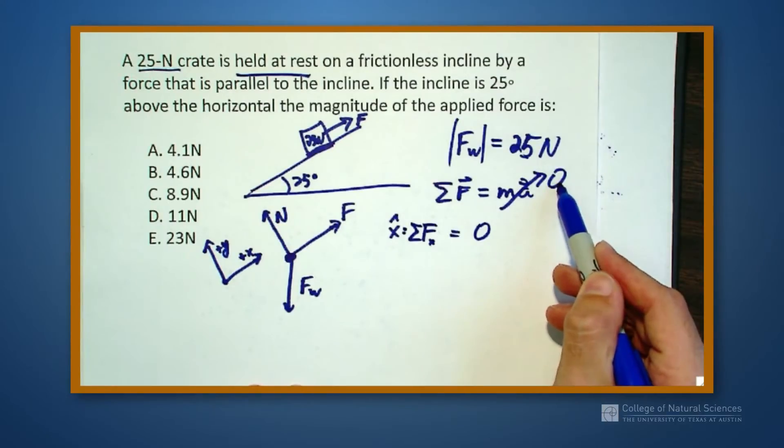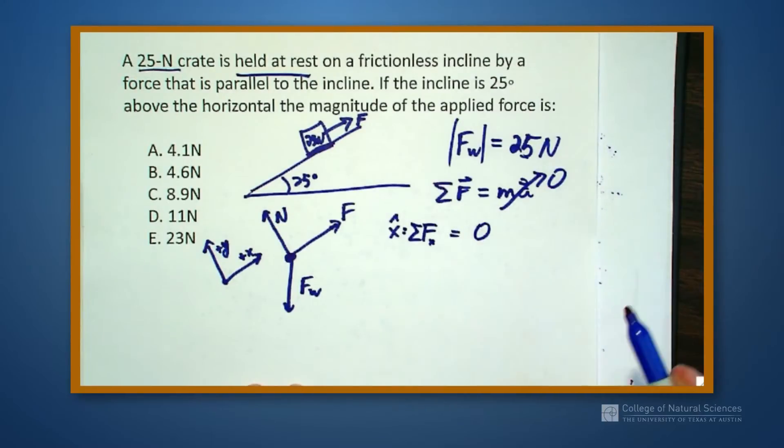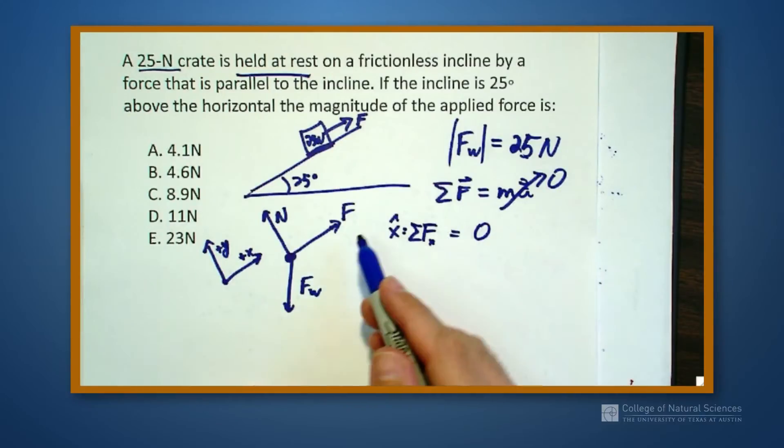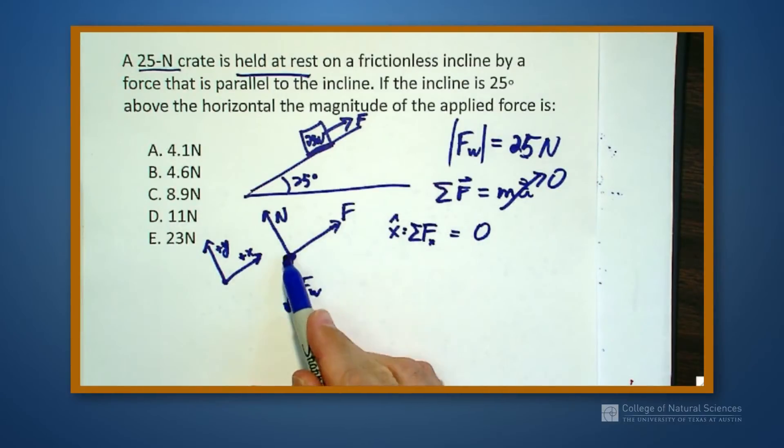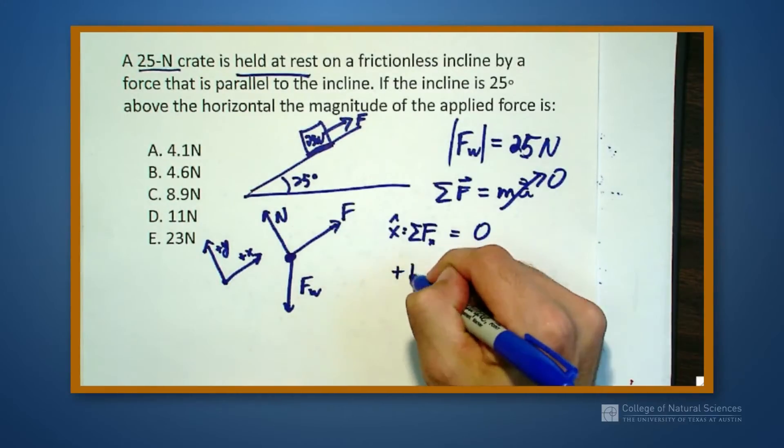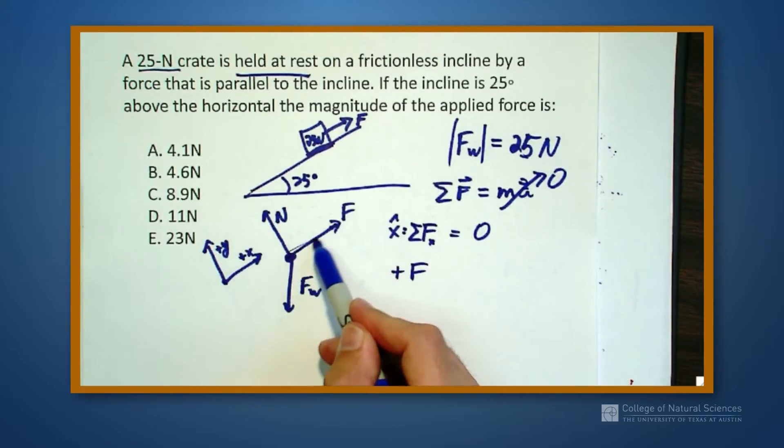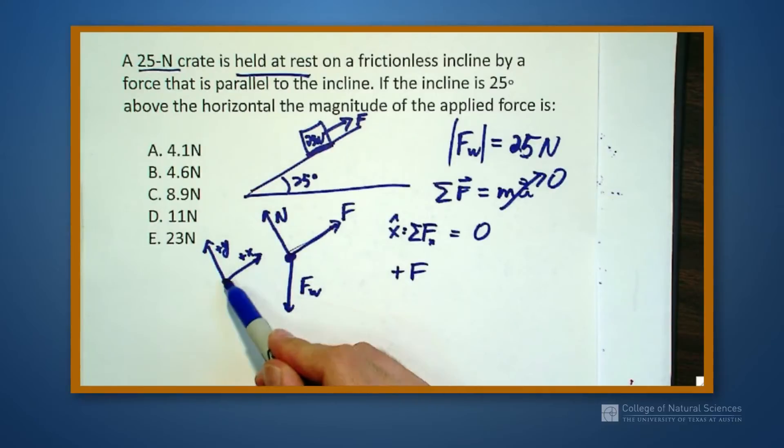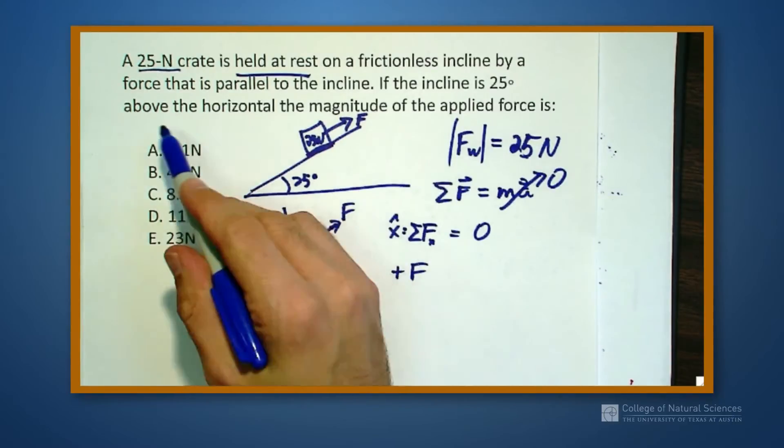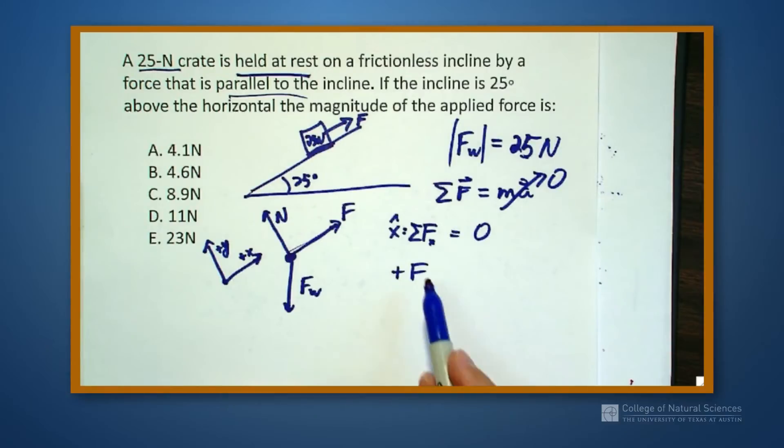Well in my x direction it says add up all my forces in the x direction and it has to give me zero. Right? My total acceleration is zero so each component of acceleration, my x component of acceleration, has to be zero. So as I go around I'm going to start over here in the positive x direction and add up all my forces that are in the x direction. Well first thing I come across is positive F. Right? It's in the positive x direction. It's solely in the x direction because it's solely up the ramp because that's what it says, parallel to the incline.